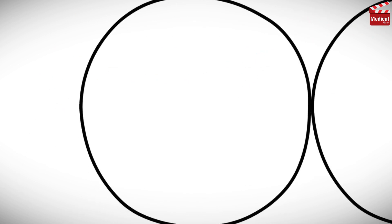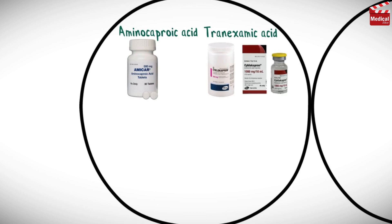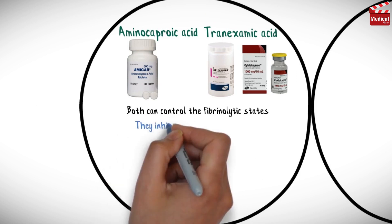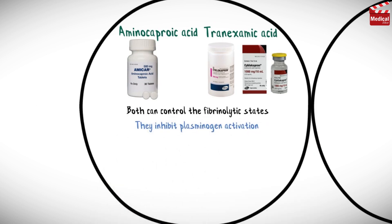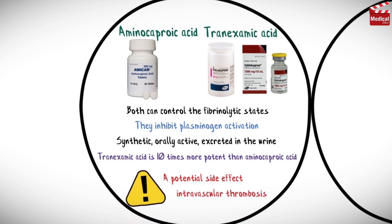There are four agents we'll discuss in this lecture. The first two are aminocaproic acid and tranexamic acid. Both agents can control fibrinolytic states — they inhibit plasminogen activation. Both agents are synthetic, orally active, and excreted in the urine. Tranexamic acid is 10 times more potent than aminocaproic acid. A potential side effect for these agents is intravascular thrombosis.